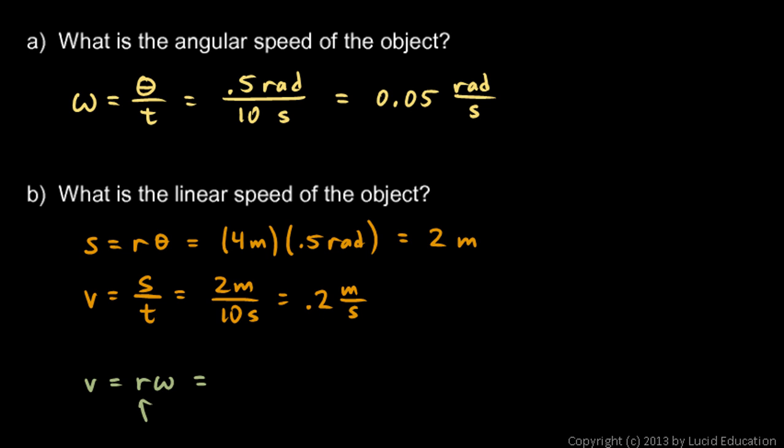What is r? The radius of this circle is 4 meters. And ω, we found out, 0.05 radians per second. And 4 times 0.05 is 0.2. And that would be meters per second. See, we got the same answer there that we had there.